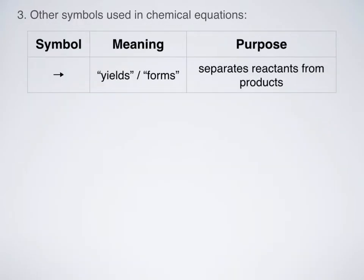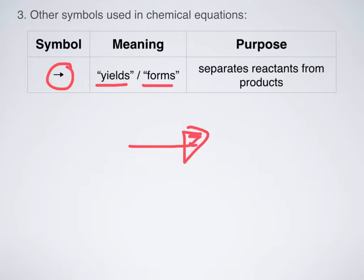It's important to recognize the different symbols used in chemical equations. Anytime you see an arrow, that can be read as the word 'yields' or 'forms.' The purpose of an arrow in a chemical equation is to separate the reactants from the products. Anytime you see an arrow, that should be your clue that your reactants are on one side and your products are on the opposite side.